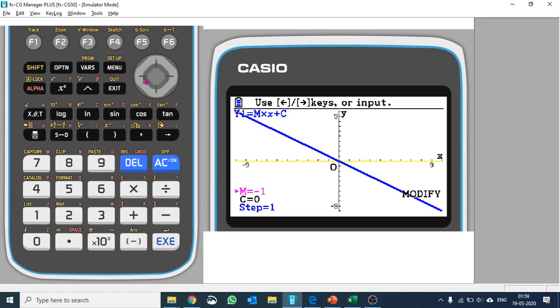Let's see what happens when you change the value of c. Currently the value of c is 0, so it is crossing through the origin. If you change the value from 0 to 1, it is the y-intercept.